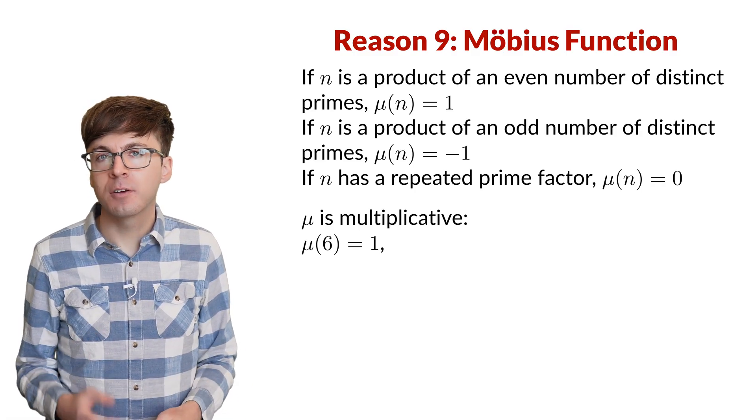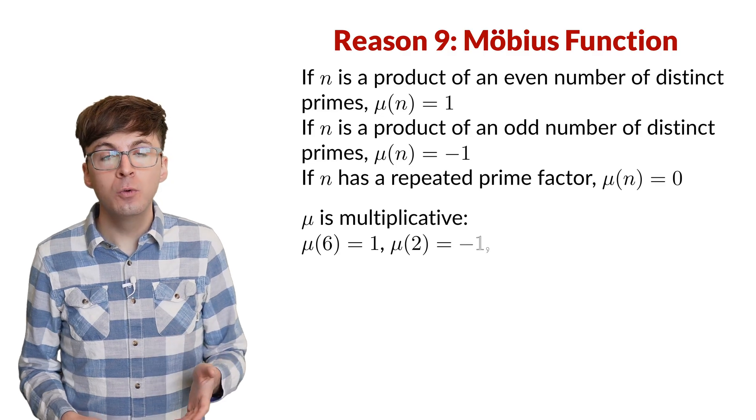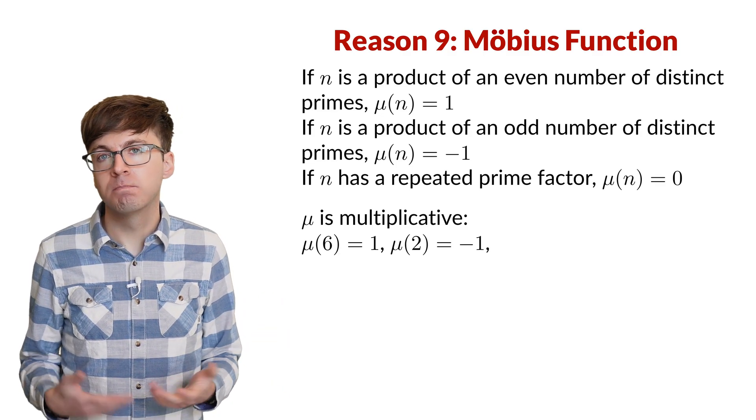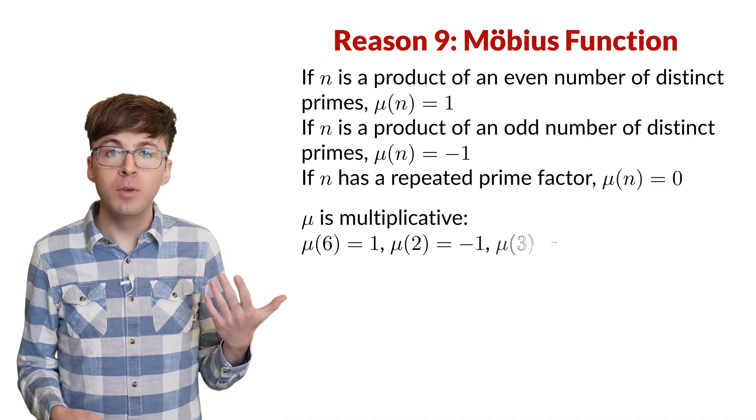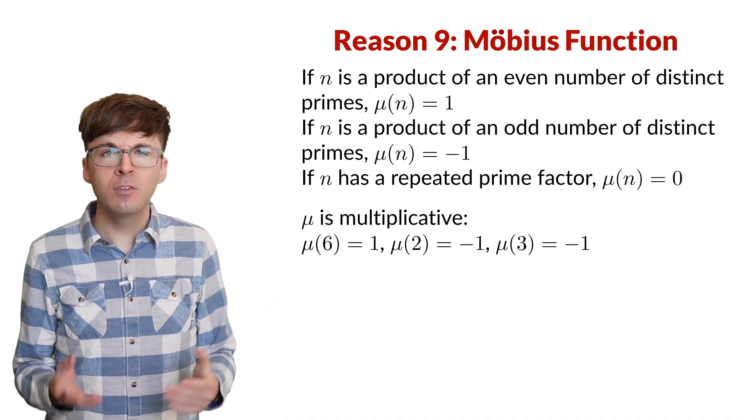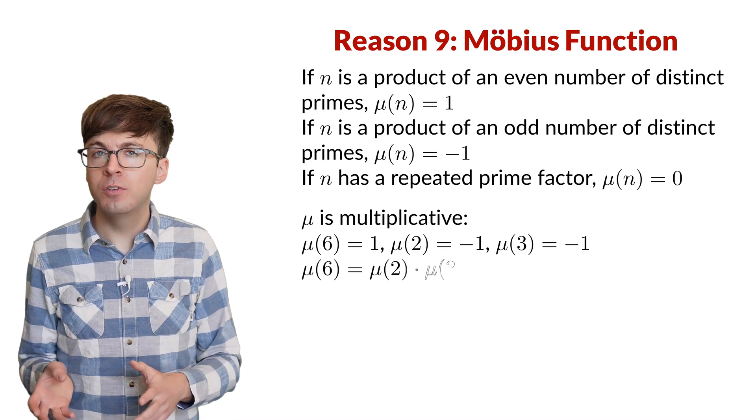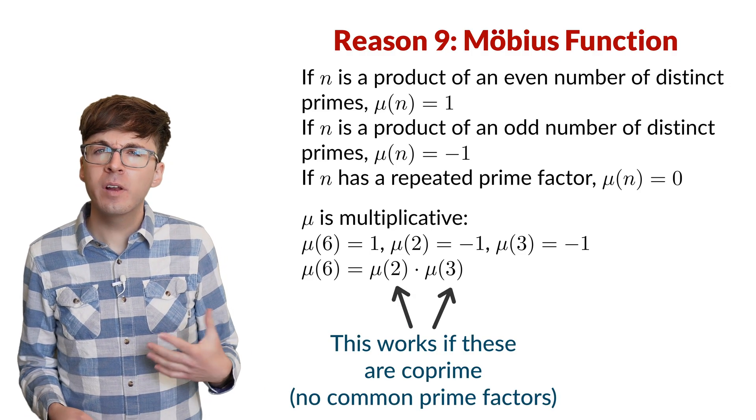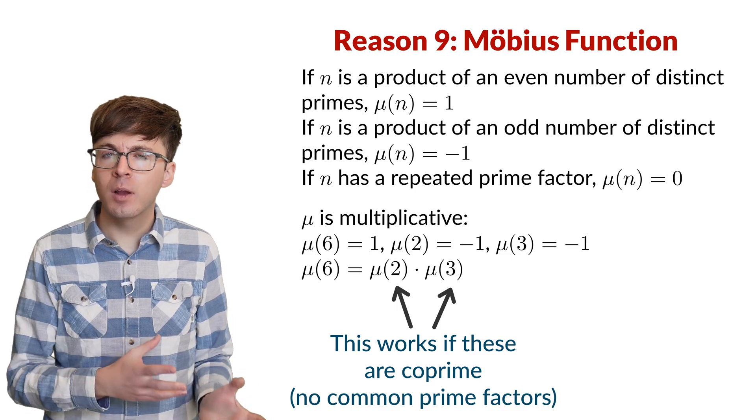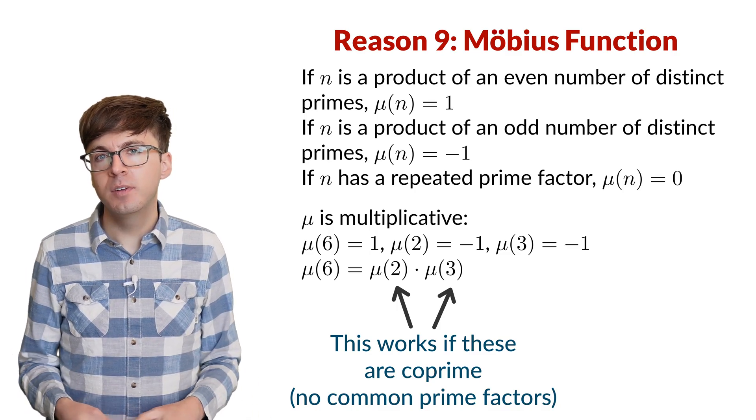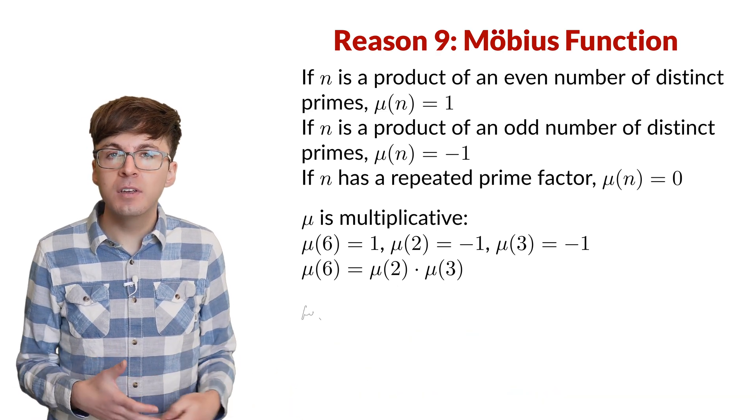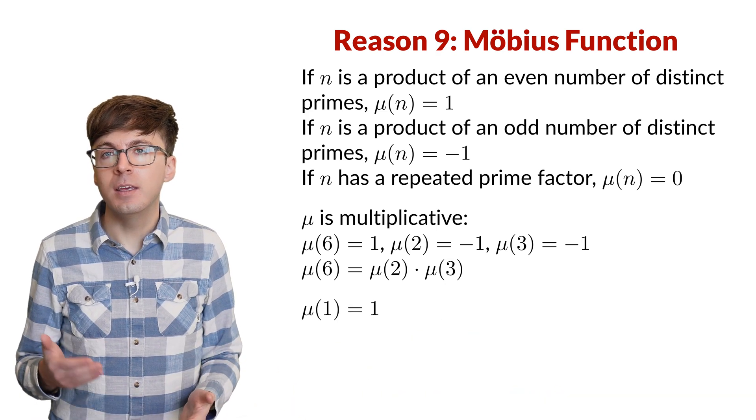Mu of 2 is negative 1, since 2 only has one prime factor itself. Similarly, mu of 3 is negative 1. So mu of 6 equals mu of 2 times mu of 3. So what is mu of 1? Well, 1 is not prime, and no prime number divides 1. So we say that 1 has 0 prime factors. Since 0 is even, that means that mu of 1 equals 1.